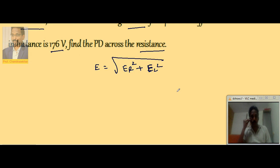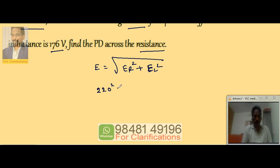Now, E is given as 220. So squaring both sides, E_R squared is unknown plus this is 176 squared.